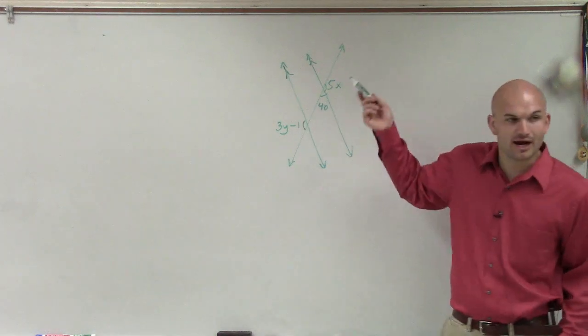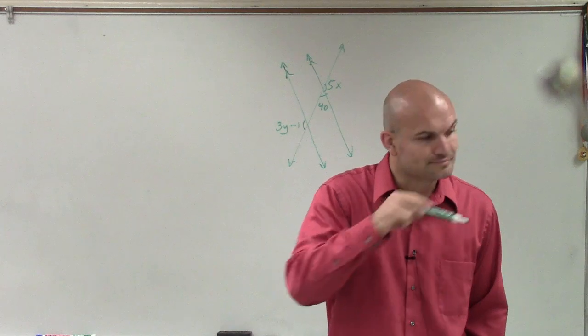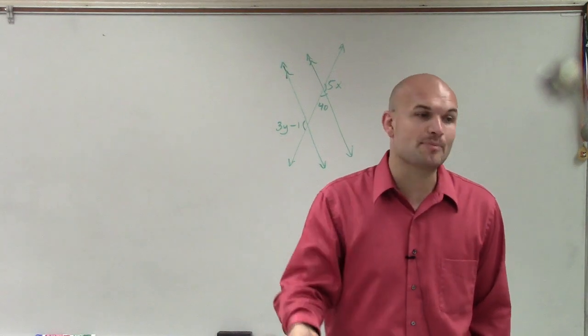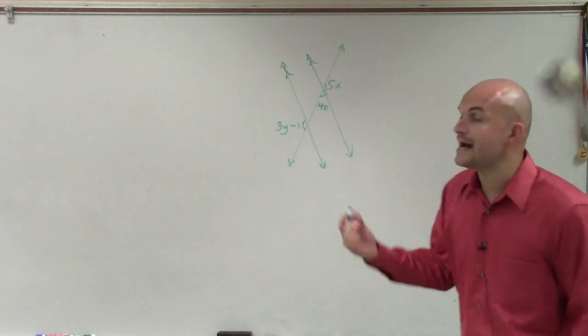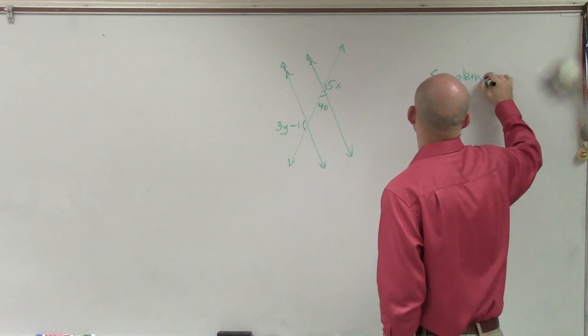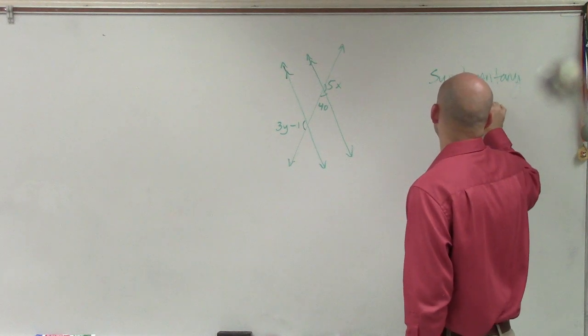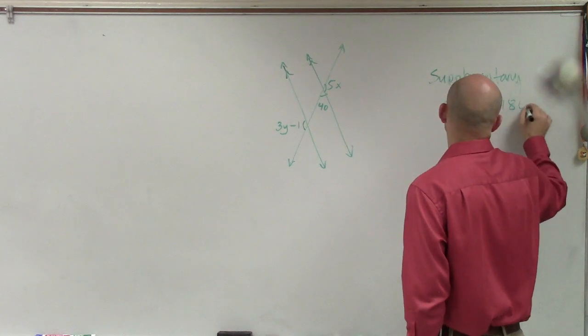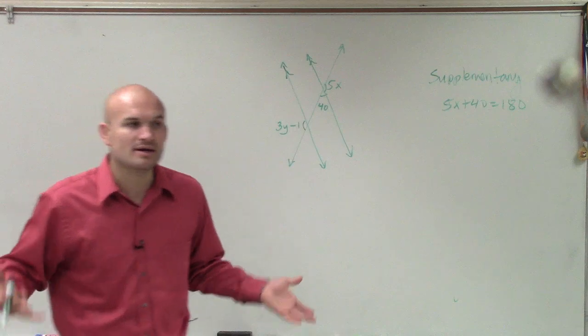They're called a linear pair. So these are a linear pair. And what's important about a linear pair is they're supplementary. Meaning supplementary angles add up to 180. Now, so I write supplementary, and I say 5x plus 40 equals 180. So that's why that's so important.